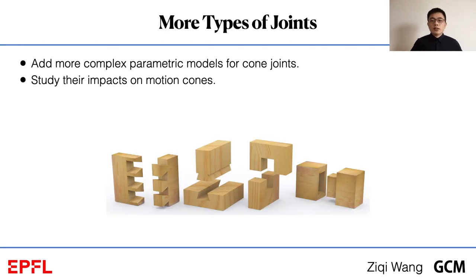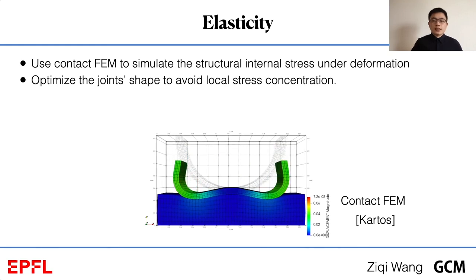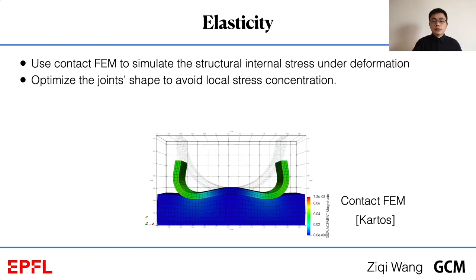Currently, our method has limited types of joints. In the future, we would like to explore more types of joints and their parametric model. We would like to study their impacts on the motion cones. We also would like to relax the rigid body assumption and consider elastic bodies that are in contact. Optimizing contact geometry for reducing internal stress concentration would be a promising topic. Thank you.